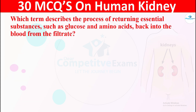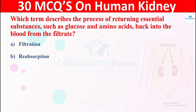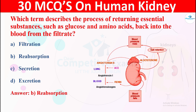Question 23: Which term describes the process of returning essential substances such as glucose and amino acids back into the blood from the filtrate? The options are: A) filtration, B) reabsorption, C) secretion, or D) excretion. The right answer is reabsorption. Reabsorption is the process of returning essential substances to the blood.